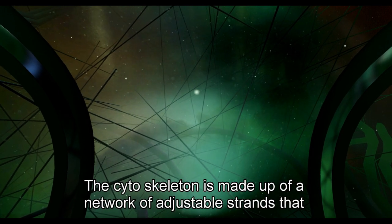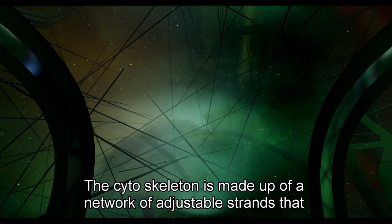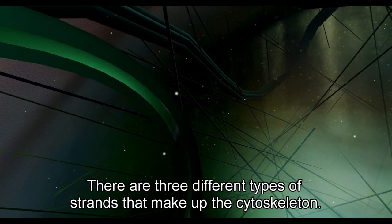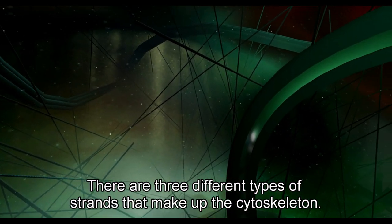The cytoskeleton is made up of a network of adjustable strands that gives the cell its structure. There are three different types of strands that make up the cytoskeleton.